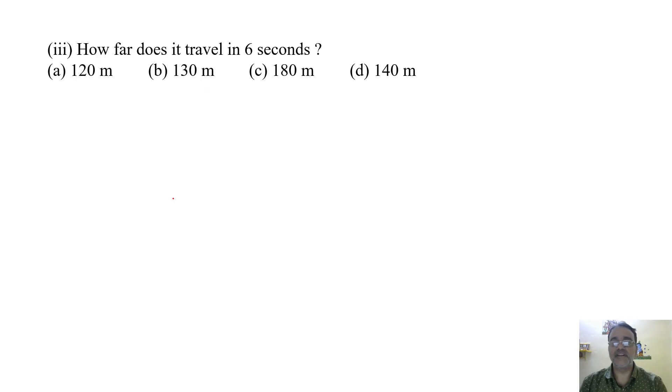Now we will move toward the third question. How far does it travel in 6 seconds? This is very similar. Time is given 6 seconds and distance is speed into time. Speed is already 30 meters per second into 6. So we will get 180 meters. Correct option is C.